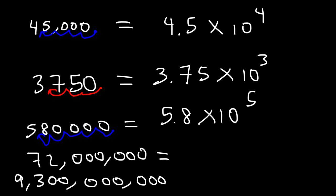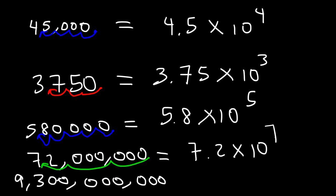For the next example, I want the decimal between the 7 and the 2. I moved it 7 spaces to the left, so it's going to be 7.2 times 10 to the 7.